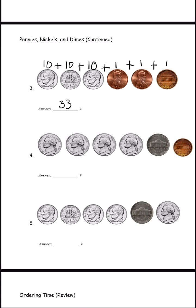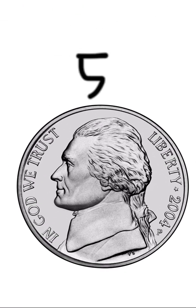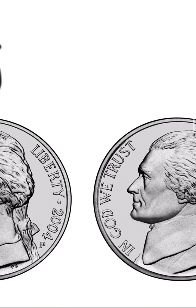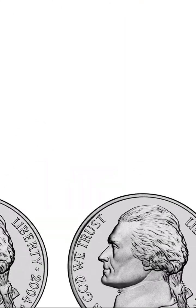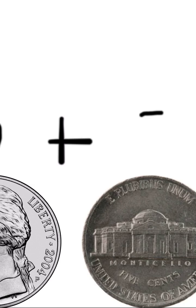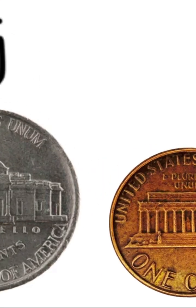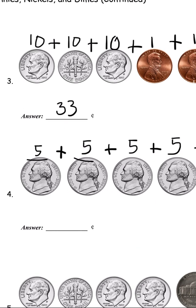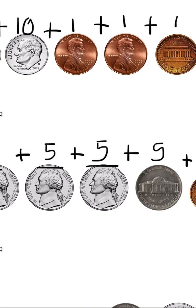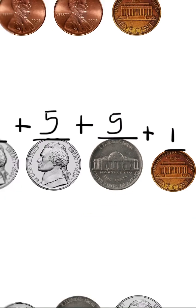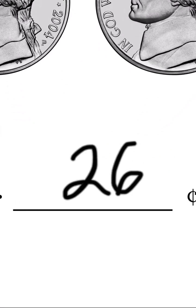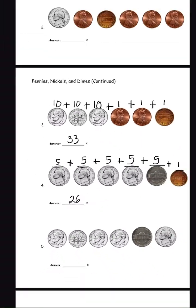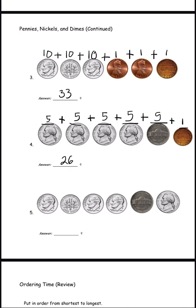So thirty plus one plus one plus one should be thirty-three cents. Thirty-three cents is the answer for number three. Now let's look at number four. For number four you have a nickel which is five, plus another nickel which is five, plus another nickel which is five, and plus one because a penny is one cent. So five plus five is ten, plus five is fifteen, plus five is twenty — wait, ten, fifteen, twenty, twenty-five, and twenty-six.